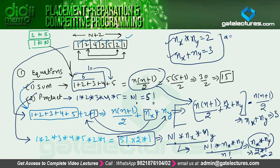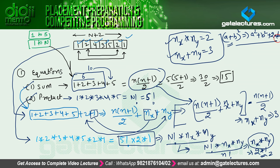We can use these two equations to find x and y. For example, using the identity: a plus b whole square equals a squared plus b squared plus 2ab. Since we know the value of a plus b and a multiplied by b, we can find a squared plus b squared, and use that to find the individual numbers.